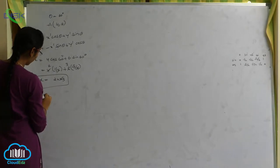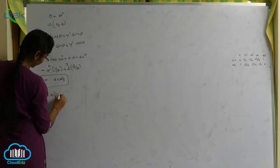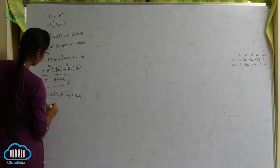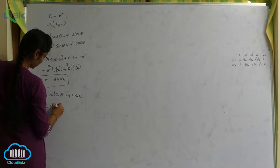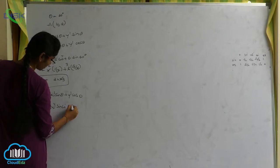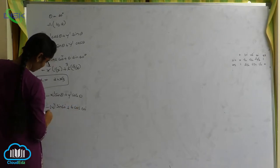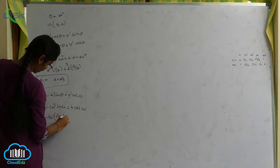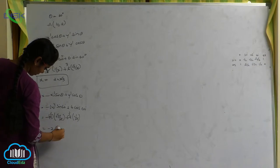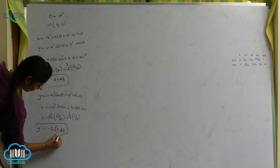Again, y is equals to the formula: minus x dash sin theta plus y dash cos theta. So, minus x dash under 4 sin 60 plus y dash under 6 cos 60. That gives minus 4 into sin 60 equals root 3 by 2, plus 6 into cos 60 equals 1 by 2. Result: minus 2 root 3 plus 3. y is equals to minus 2 root 3 plus 3.